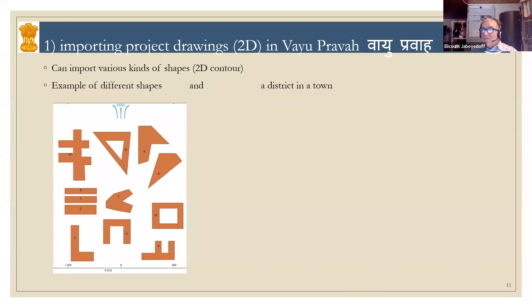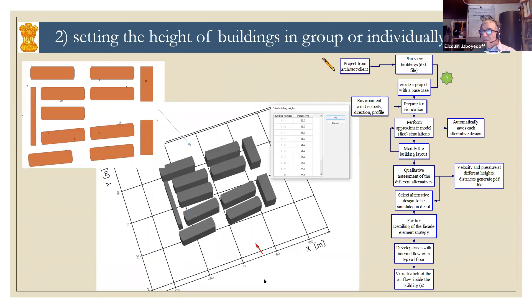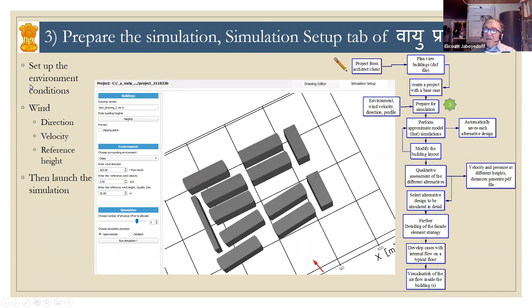It can go up to a district-scale situation where you can simulate such large areas. After importing, you can set the height of buildings from the DXF plans and then prepare the simulation. There, you need to set up the environmental conditions like the wind direction, its velocity, and the reference height that you get from your data — essentially the wind velocity and direction during the hot summer, which is when you are trying to do night cooling by cross ventilation. Then you can launch the simulation.